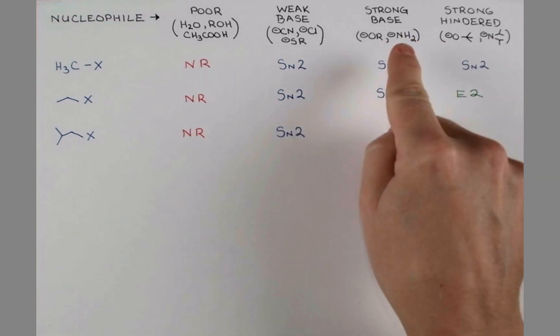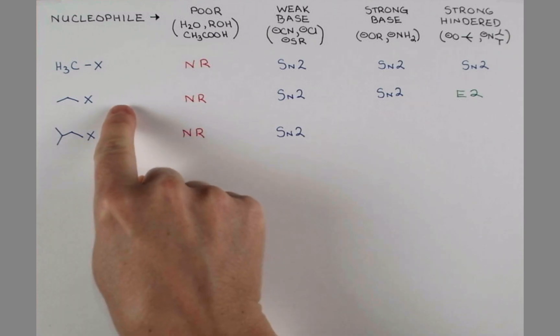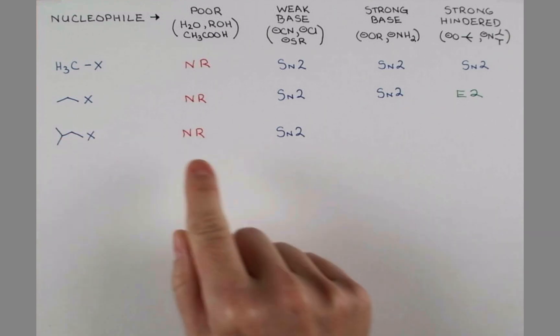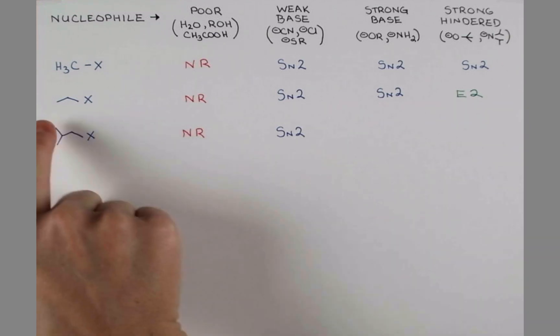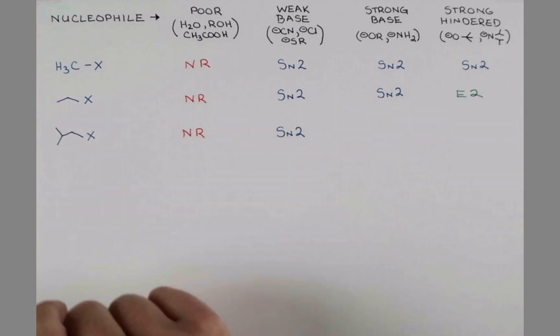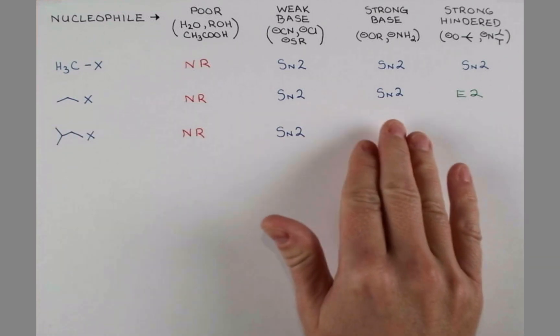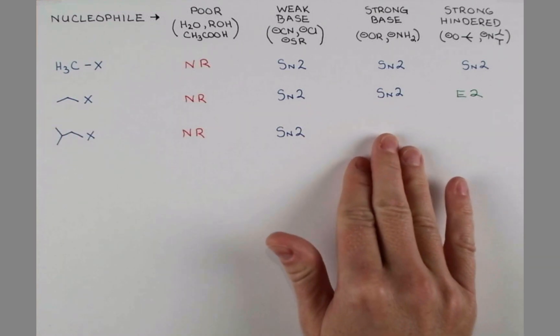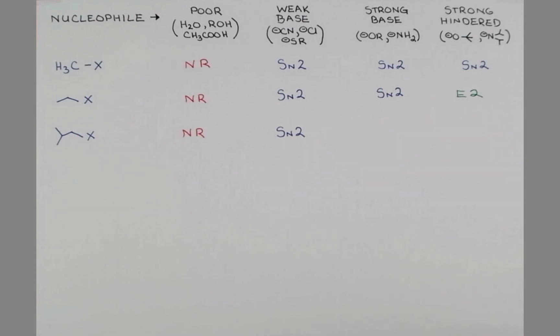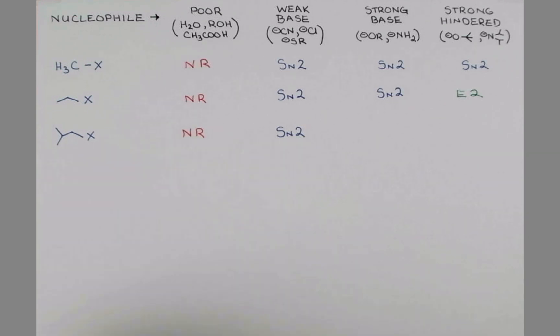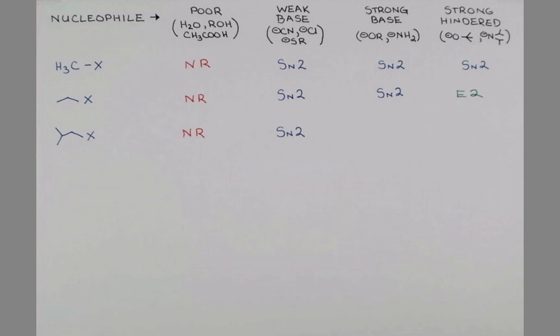These strong bases are not going to have as easy access to this carbon to kick off the leaving group in an SN2 fashion, like they do with the unbranched primary. So here, we'll see when we start using strong base and strong hindered base, we're going to promote E2 eliminations with this substrate. Of course, it's E2 because we're still dealing with a primary substrate. Primary carbocations are not stable.